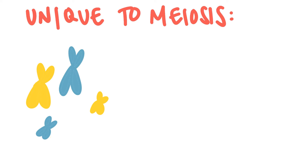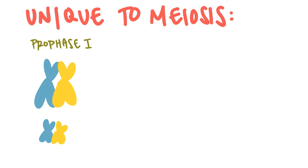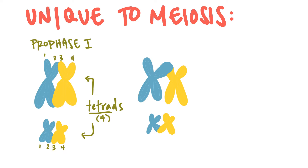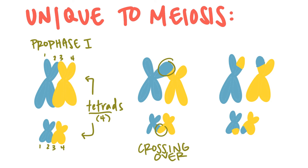Some events are completely unique to meiosis. During prophase one, homologous chromosomes pair up and form structures called tetrads — tetrads because they consist of four chromatids. While the homologous chromosomes are in close contact with each other, they can actually exchange pieces of DNA. This process is called crossing over, and it generates recombinant chromatids — chromatids that have DNA from different sources. These are no longer identical, and this is one of the ways that meiosis introduces genetic variation into our daughter cells.